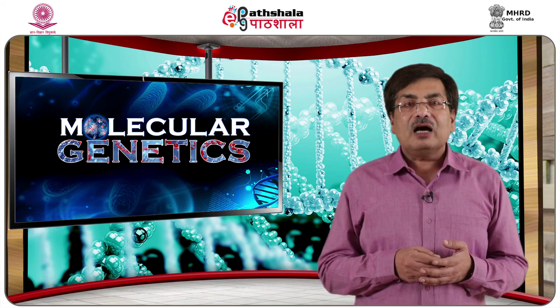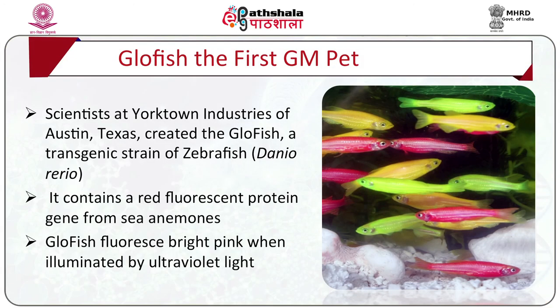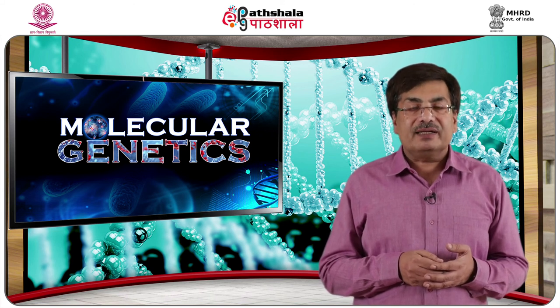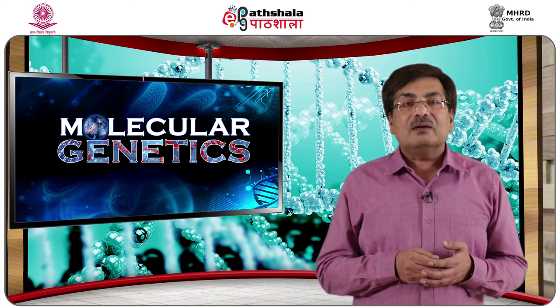Scientists at Yorktown Industries of Austin, Texas created the GloFish — a transgenic strain of zebrafish containing a red fluorescent protein gene from sea coral. GloFish fluoresces bright pink when illuminated by ultraviolet light and was marketed as the first GM pet in the United States. A variety of different colored GloFishes are currently available at pet stores.